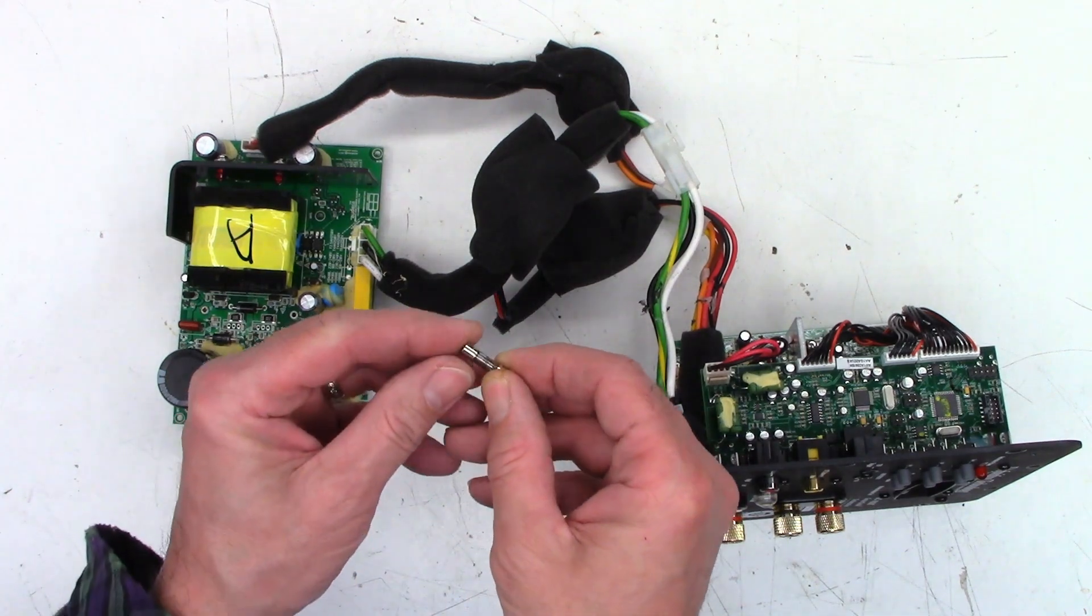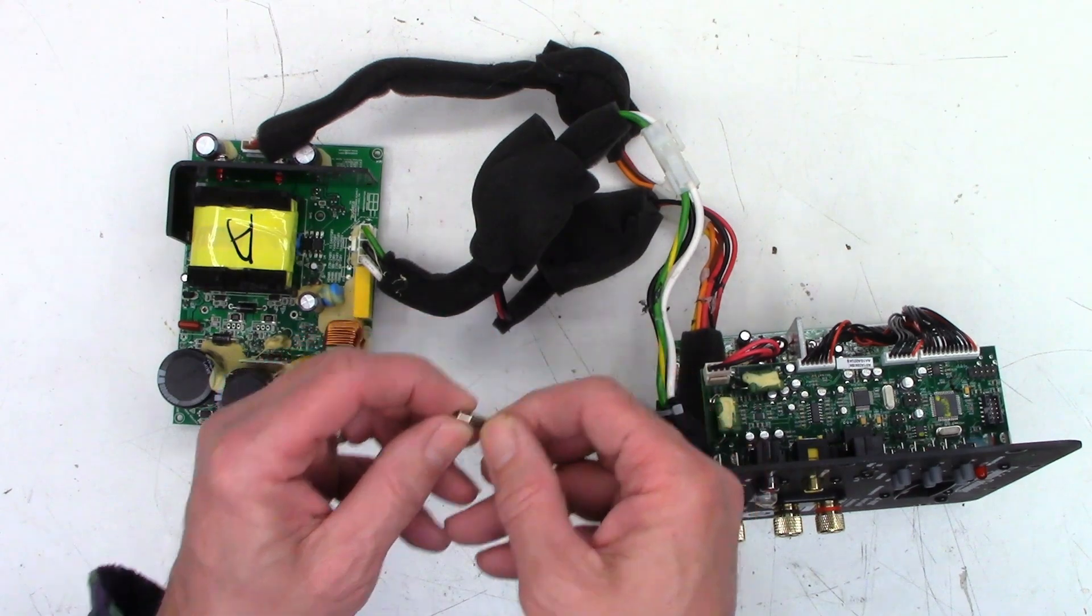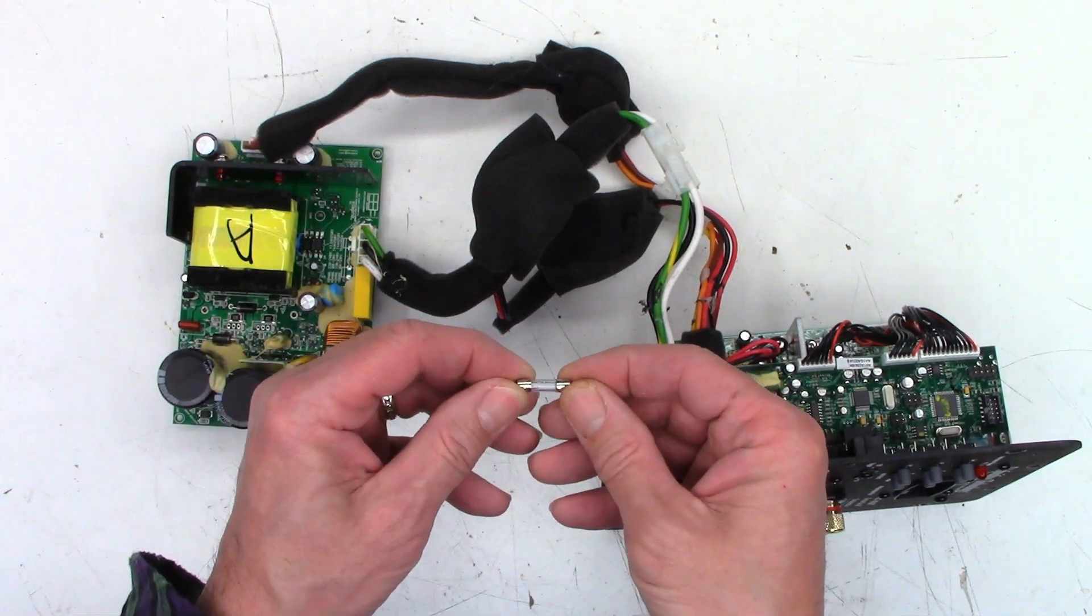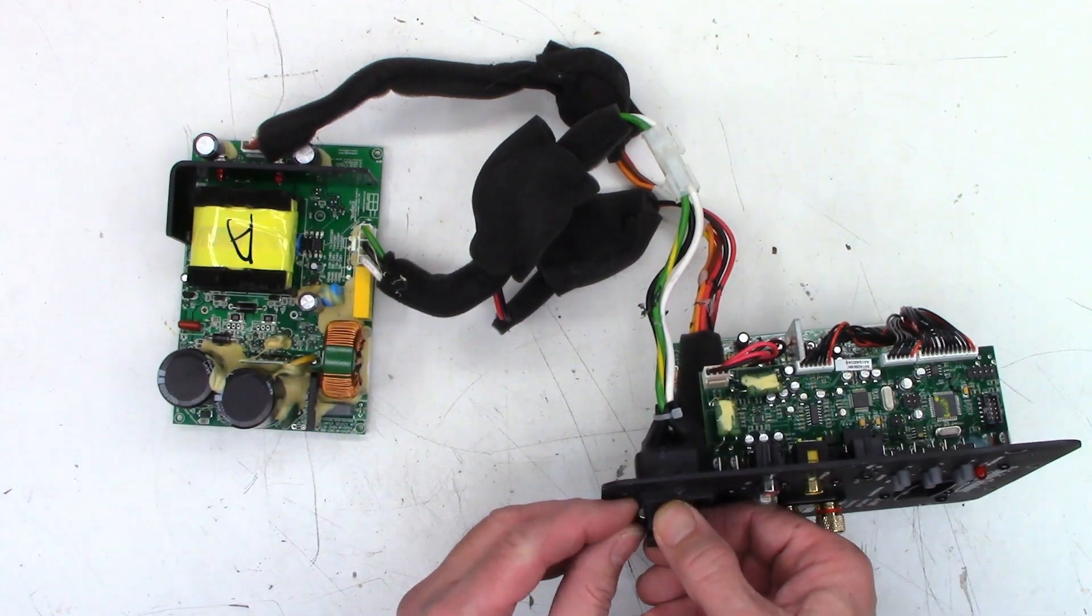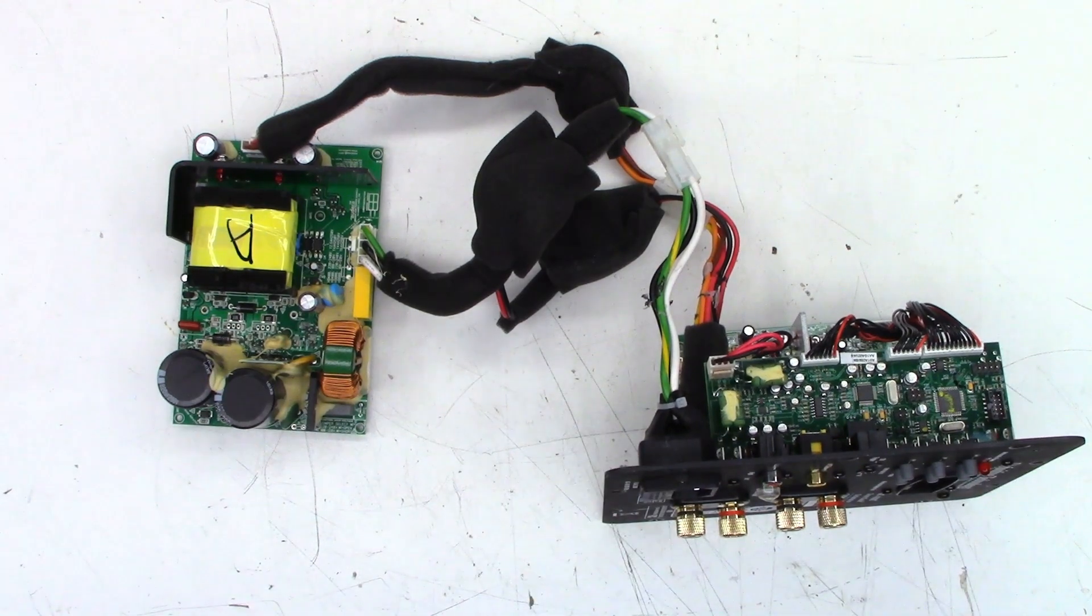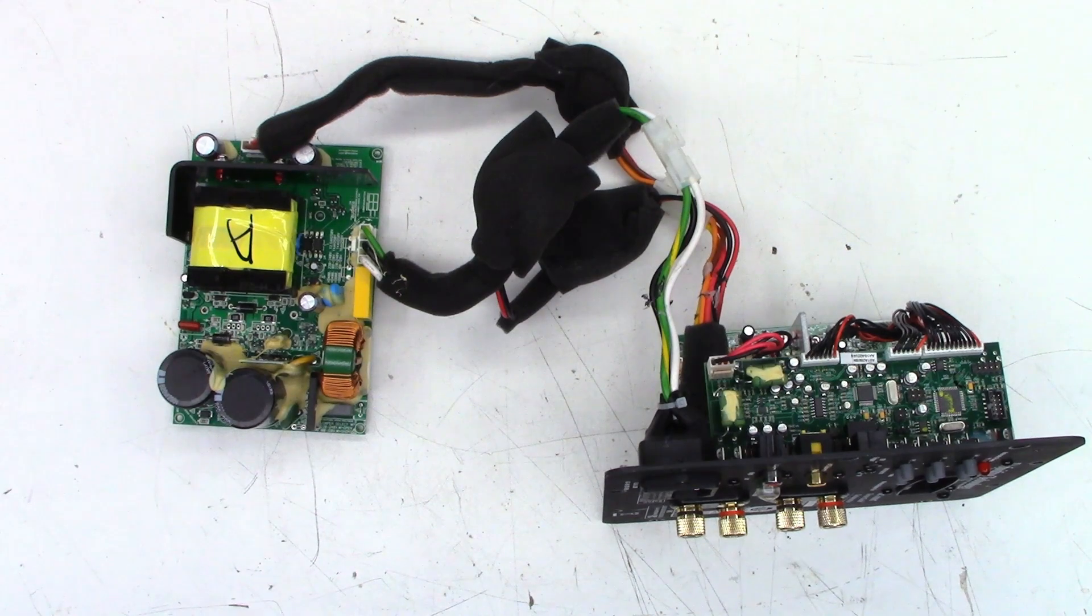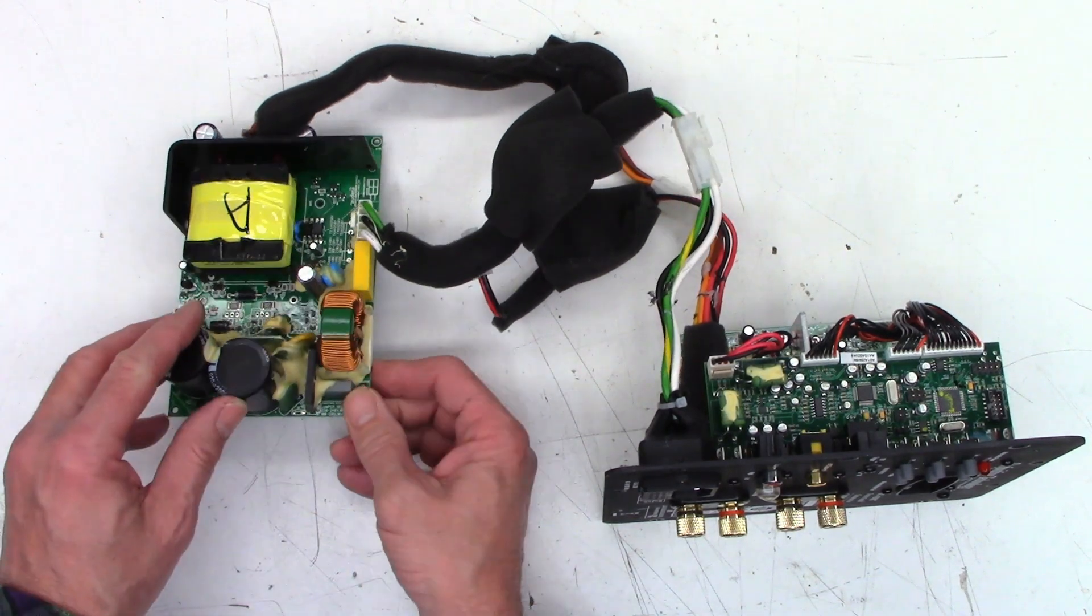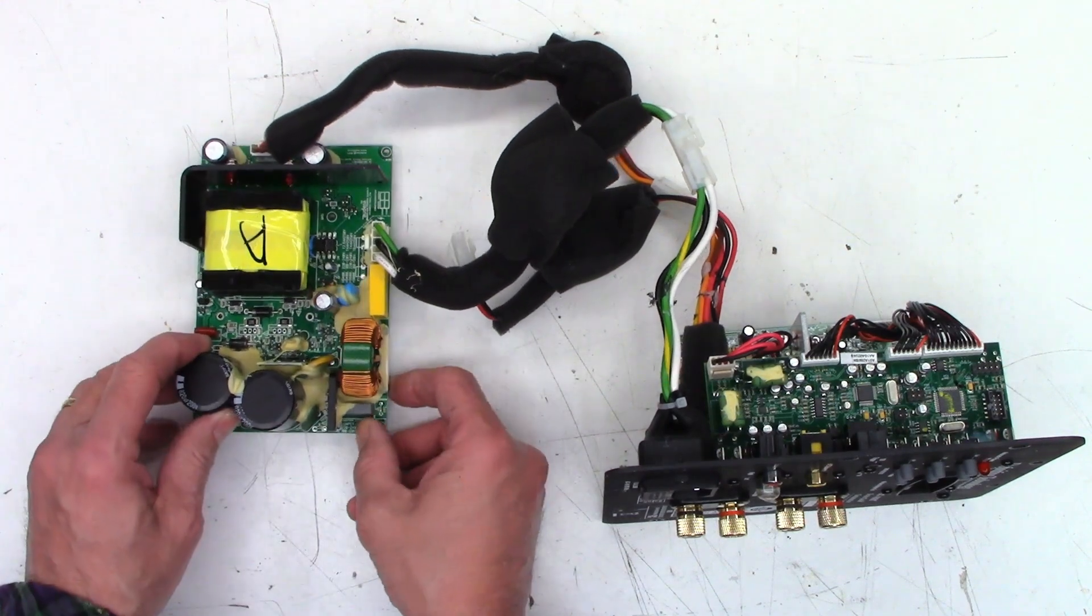Now this is a time delay 6.3 amp fuse, but I'm only going to put in a slow blow or time delay 1 amp fuse for testing purposes. Because I don't have the output FETs in this, and I don't think the inrush on these two caps is going to be much over 1 amp, especially with this thermistor. I believe these are both PTC thermistors.